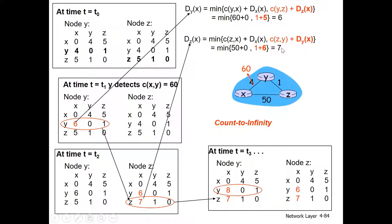If that is not 0, then it is 7. In this way, Y will be similar and will be known to be 8. Then Y will be distributed to Z, and DZX. Then Y will be distributed, and Y to X equals 50. This problem is the count-to-infinity problem.